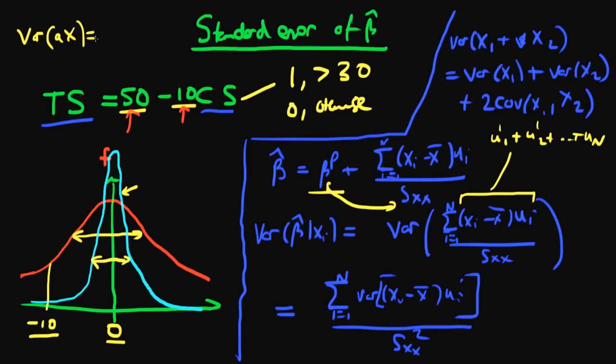And notice that this sxx on the bottom only contains x terms which are either non-stochastic or they're fixed in repeated samples, which means that this is just essentially a number on the bottom here.